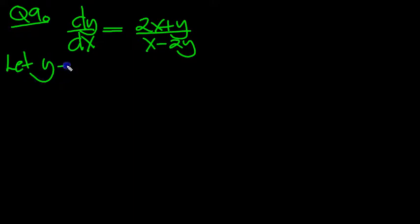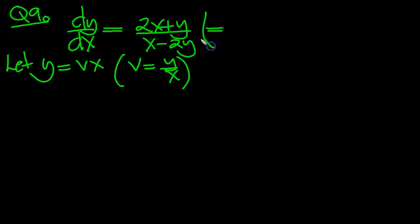Let y equal vx. In other words, v is equal to y over x. So with that thought in mind, this will equal then, divide by x top and bottom, 2 plus v over 1 minus 2v.